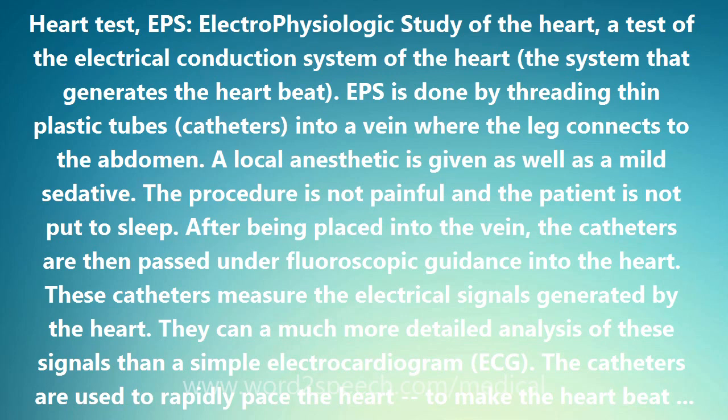These catheters measure the electrical signals generated by the heart. They can provide a much more detailed analysis of these signals than a simple electrocardiogram. The catheters are used to rapidly pace the heart — to make the heart beat quickly. The electrical conduction system of the heart is also measured during this rapid pacing, and the heart is observed to see if any abnormal heart rhythms develop. The reason for doing EPS may be to determine these abnormalities.